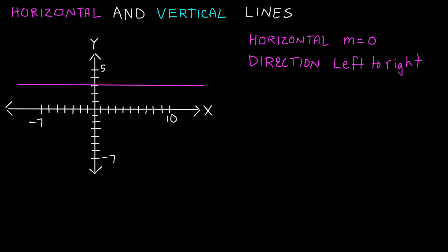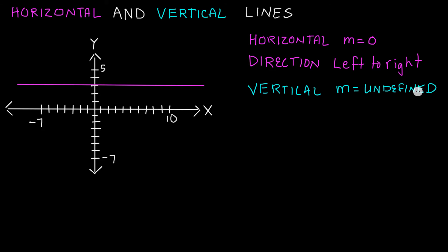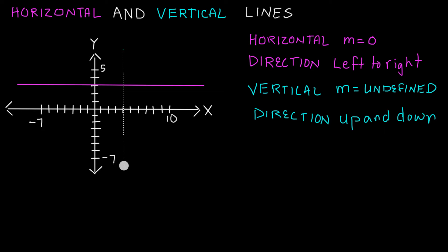On the other hand, a vertical line is going to have a slope which we'll refer to as M, and the slope is actually going to be undefined. You might argue that it doesn't really have a slope since the slope is undefined. An undefined slope means that the direction of the line is actually up and down. So here we have a vertical line and here we have a horizontal line. The horizontal line has a slope of zero and travels left and right. The vertical line has an undefined slope and travels up and down.